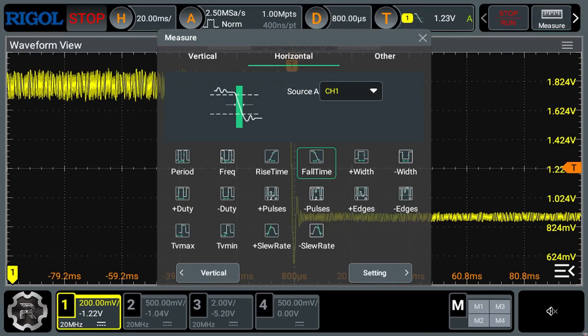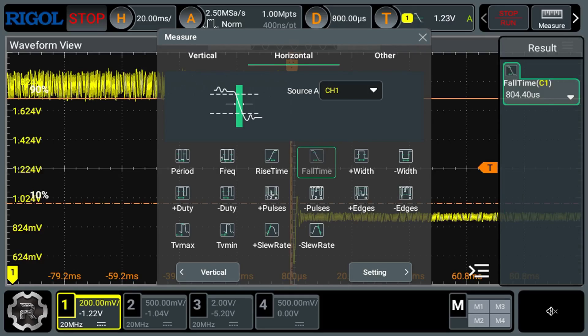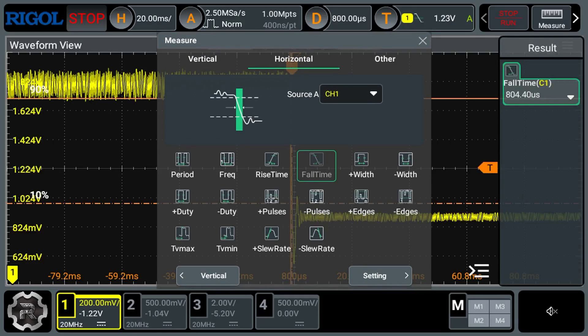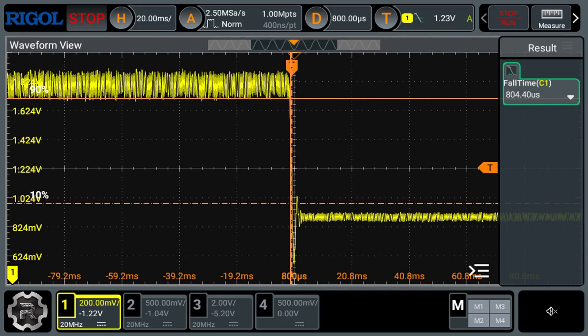I'm going to let the scope measure the rise and fall times. It will be more consistent than me moving cursors and it will be faster. Going to start here with the fall times.